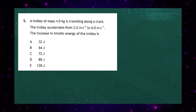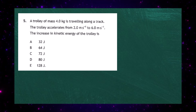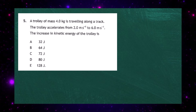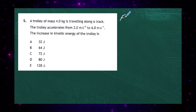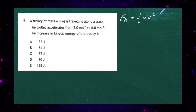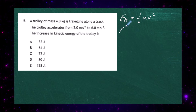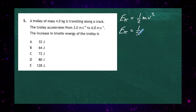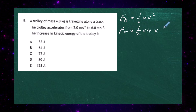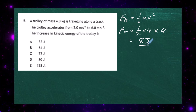Question five. A trolley of mass four kilograms accelerates from two metres per second to six metres per second. We need to find the increase in kinetic energy. The kinetic energy formula is EK = ½mv². At two metres per second: EK = ½ × 4 × 2² = ½ × 4 × 4 = 8 joules.